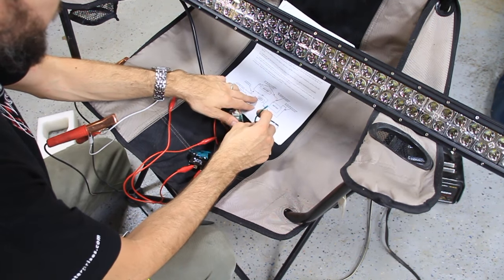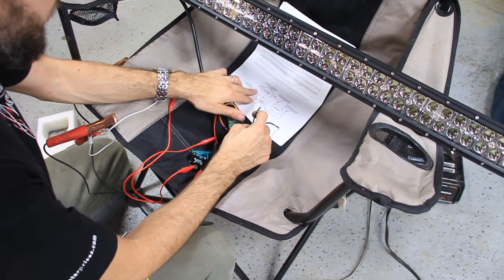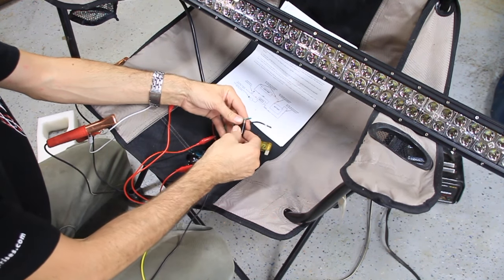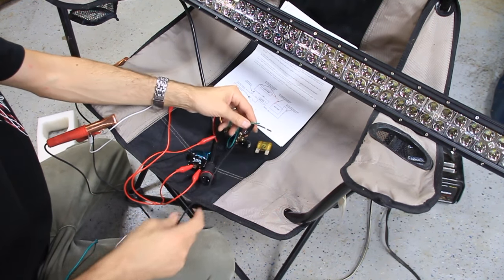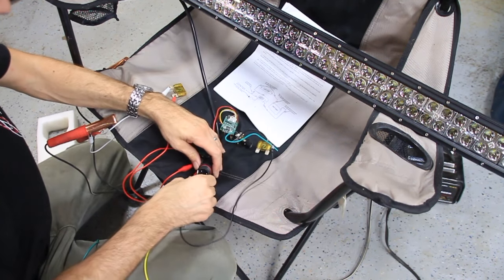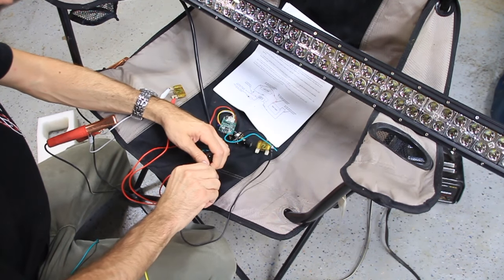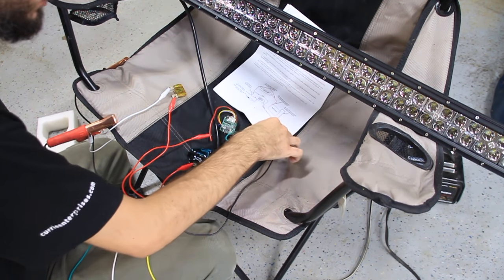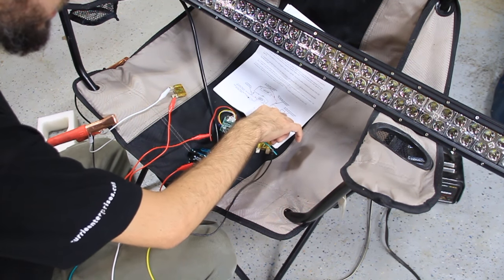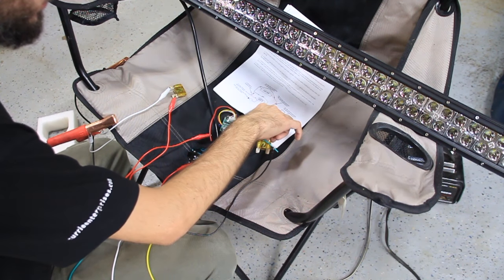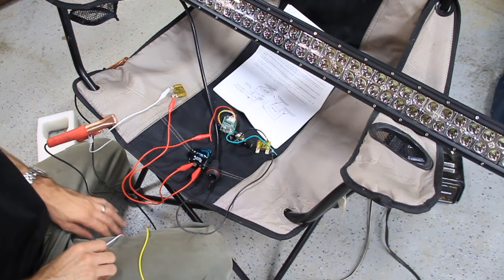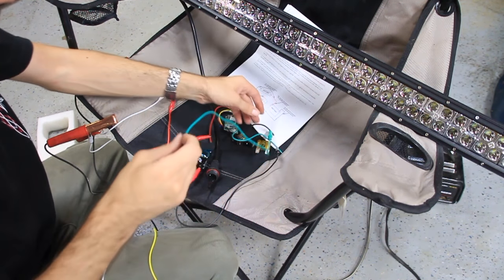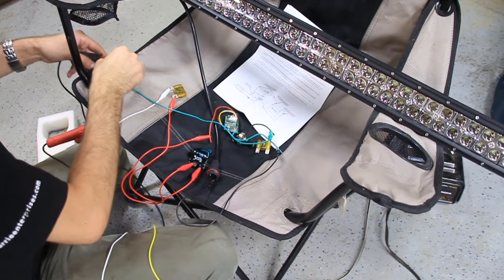Okay, so the green coming out of the control module goes to the negative on the light bar. So let's go green to negative on the light bar which is going to be right here. The black coming out of the control module goes to the negative on the battery. So that goes over here.